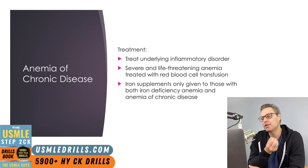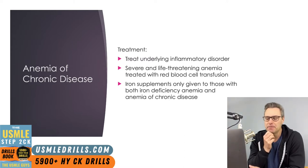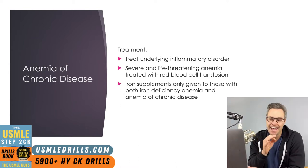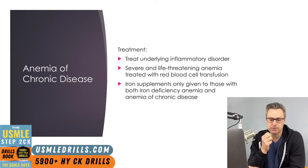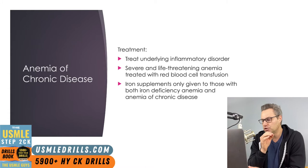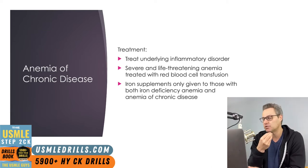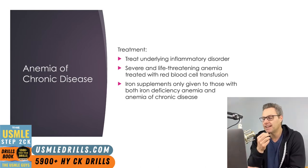Treatment for anemia of chronic disease consists mainly of treating the underlying inflammatory disorder. For severe, life-threatening anemia, red blood cell transfusion can be used. Iron supplements are only given to those with both iron deficiency anemia and anemia of chronic disease — not to those with anemia of chronic disease alone, because while serum iron is low, there's usually a good amount of iron locked up in macrophage storage. Evolutionarily, this is thought to occur because iron is needed by bacteria to replicate, so cytokines sequester iron away from bacteria.